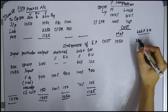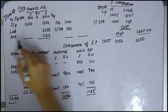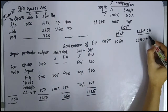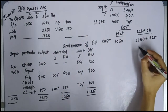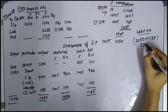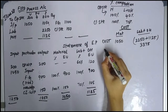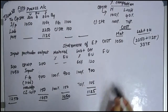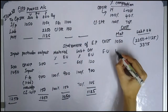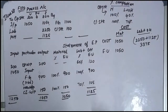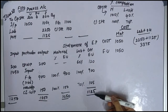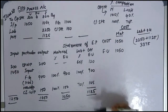Cost statement: labor is 2250, production overheads 1125, labor plus overhead combined is 2250 plus 1125 giving 3375. Equivalent units for material is 1050, and for labor and overhead is 1125. Cost per unit: material cost 1050 divided by equivalent units 1050 equals 1. Labor and overhead cost 3375 divided by 1125 gives cost per unit of 3.